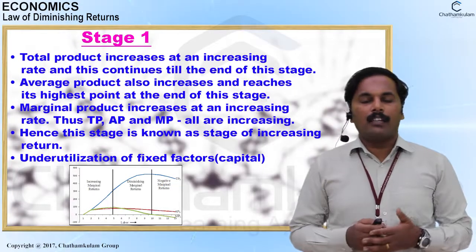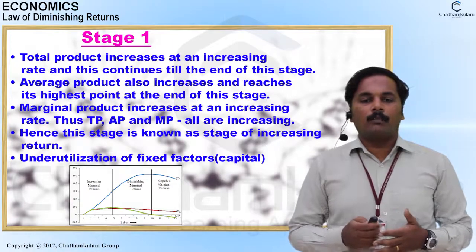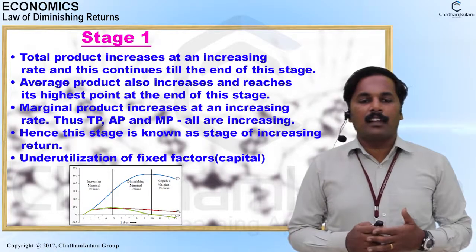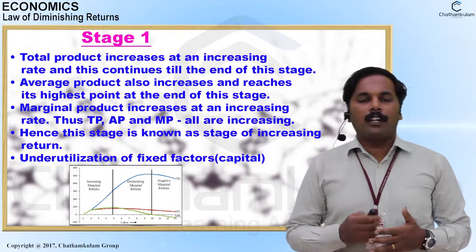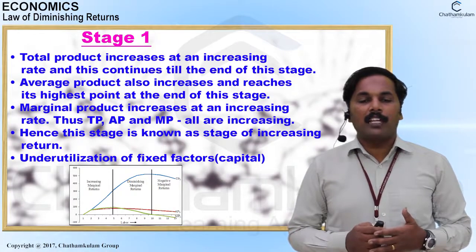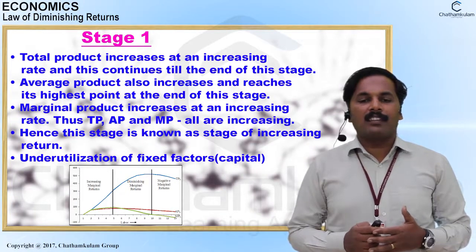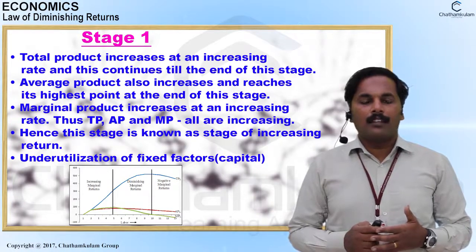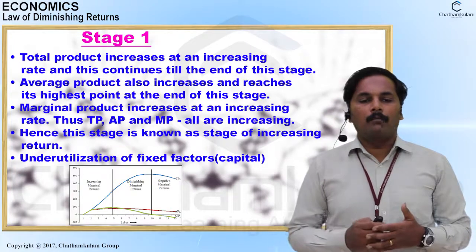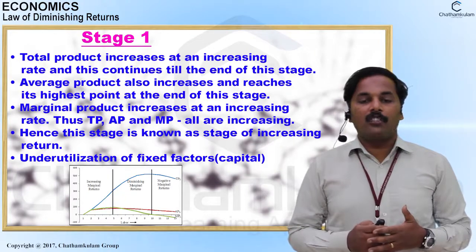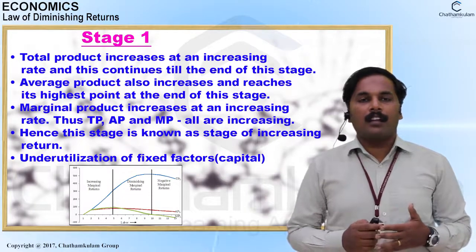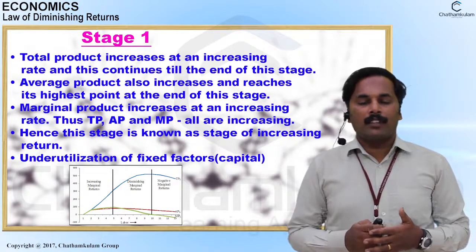In Stage 1, increasing marginal returns: the total product increases at an increasing rate and continues until the end of this stage. Average product also increases and reaches its highest point at the end of this stage. Marginal product increases at an increasing rate. TP, AP, and MP are all increasing. Hence, this stage is known as the stage of increasing returns, characterized by under-utilization of fixed capital.